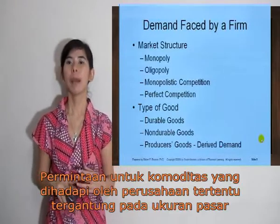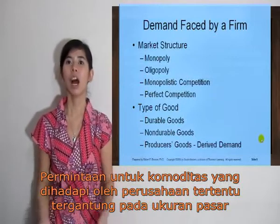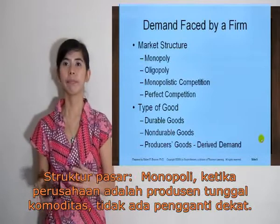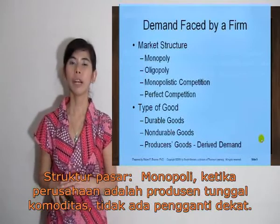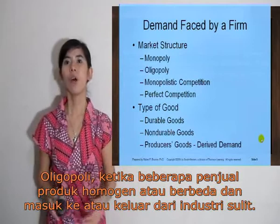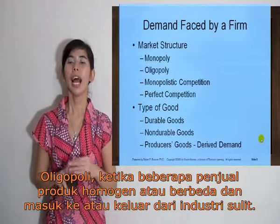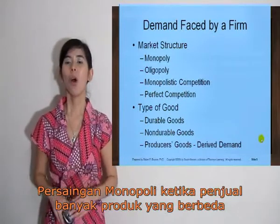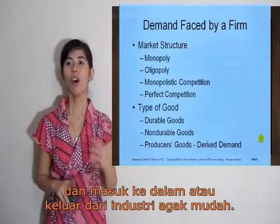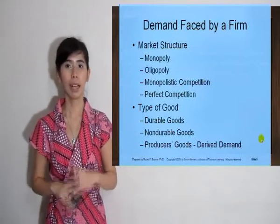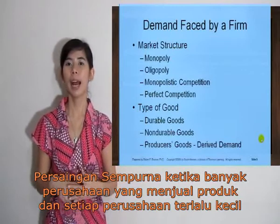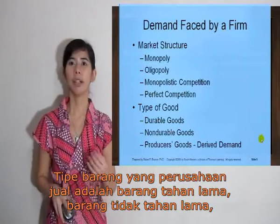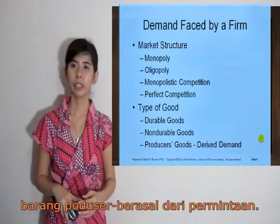Demand for a commodity raised by a particular firm depends on the size of the market and industry demand for commodity X. Market structures include: first, monopoly, when one firm sells the commodity and faces low-cost consumers; second, oligopoly, when few sellers offer differentiated products and entry into or exit from the industry is difficult; third, monopolistic competition, when many sellers offer differentiated products and entry or exit is unrestricted; and last, perfect competition, when many firms sell identical products and entry is easy. Types of goods a firm sells include durable goods, non-durable goods, producer's goods, and goods with derived demand.